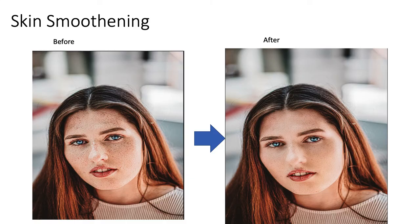Here is an example of the skin smoothening neural filter. On the left you have an image with some facial spots, and you can apply the skin smoothening filter. Behind the scenes, Adobe Sensei looks at the image, identifies the spots, and does the heavy lifting for you, producing a much smoother result.